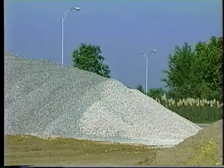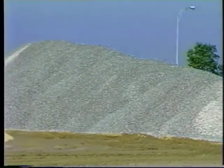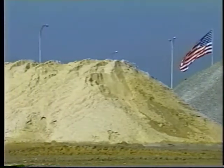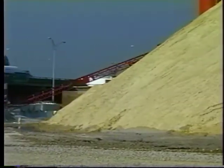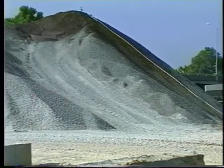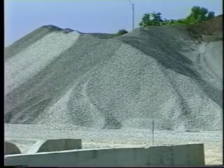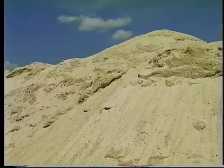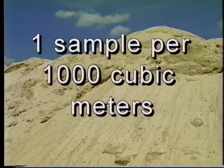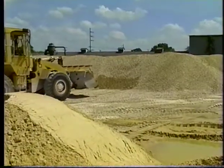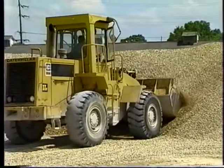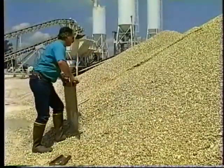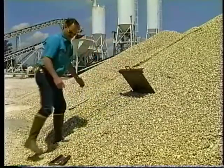Now let's move on to the procedure for sampling stockpiles. Keep in mind that a representative sample is composed of material obtained from different locations in the stockpile. At each sample location, you will collect an equal volume of material. The total number of locations used to collect a single sample must conform to the minimum requirements of the Material Sampling Manual. For instance, if you are sampling soil for the acceptance of a dedicated stockpile for a soil cement base course, the minimum sampling frequency is one sample per 1,000 cubic meters of material. Always refer to the Material Sampling Manual for determining the correct sample frequency for the type of sample you are taking. With your sample location selected, begin by inserting the shield upslope from the point of sampling. This prevents loose material from sliding into the sampling area.